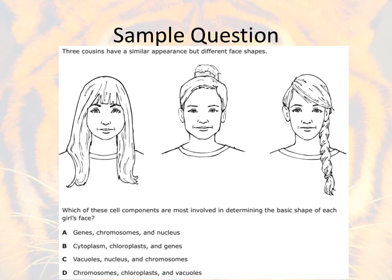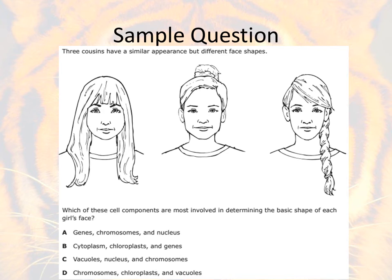In terms of testing this concept, here is a sample question. The Texas Education Agency used this one as an example on a STAAR test a couple years back. The question states that three cousins have a similar appearance but different face shapes. We need to think about which cell components are most involved in determining the basic shape of each girl's face. This is actually a question where you don't even need the pictures of the girls — you just need to think about what you know from the previous content.